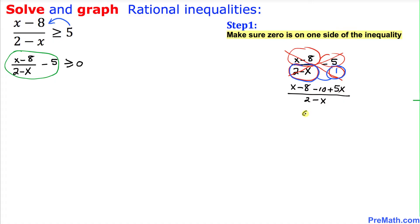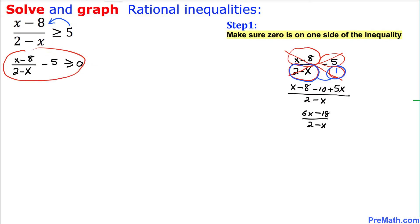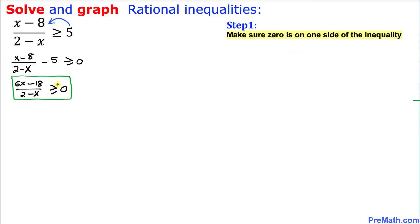x plus 5x gives us 6x, so we get 6x minus 18 divided by (2 minus x). Thus this whole expression can be written as (6x minus 18) divided by (2 minus x) is greater than or equal to 0. We have completed our very first step — one side of the inequality is 0. I'll call this inequality I.